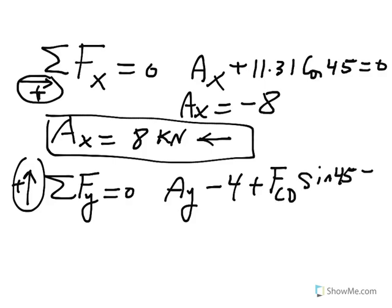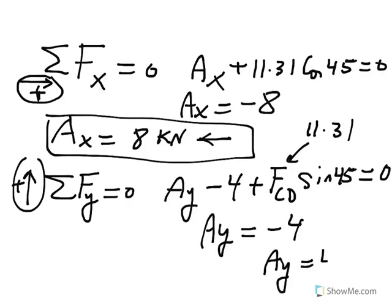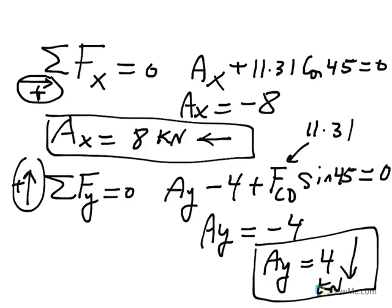Since FCD sine 45, put the FCD, which is 11.31 here, and this becomes actually 8. So AY actually happens to be negative 4, which again implies that we were wrong about the direction of AY. So AY is 4 kilonewton, in fact, pointing down.